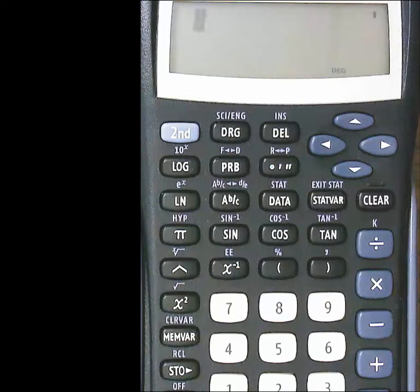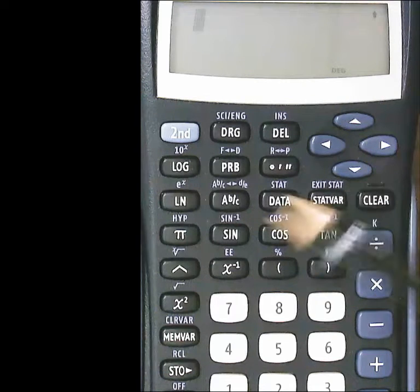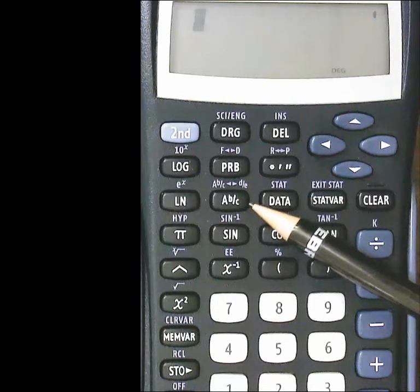Alright, I want to show how to use the fraction key on one of these scientific calculators. First thing is finding it. You should have a key like this that says A and then a B over C.